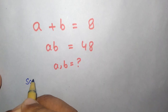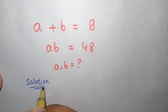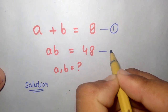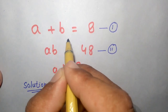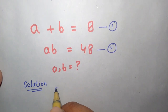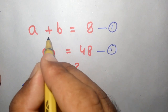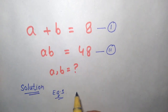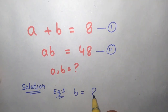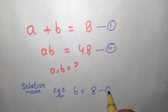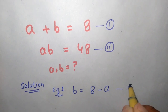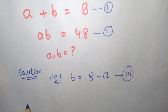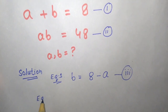For the solution, let this be equation number 1 and this be equation number 2. From equation number 1, that is a plus b equals 8, we have to obtain the value of b. So b is equal to 8 minus a. This is our equation number 3. Now we write equation number 2, that is a times b is equal to 48.